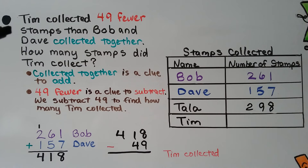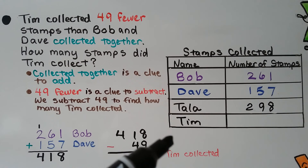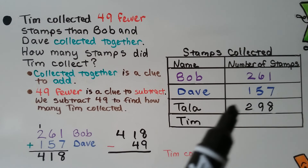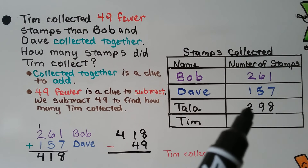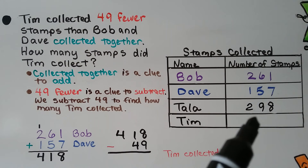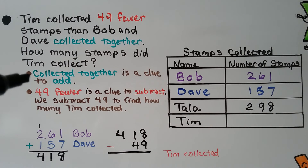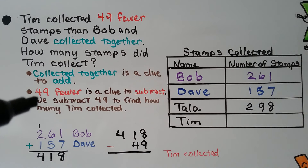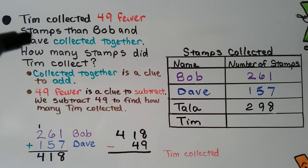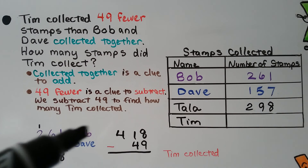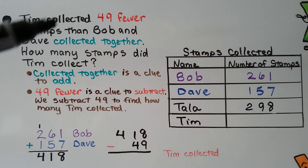Tim collected 49 fewer stamps than Bob and Dave collected together. How many stamps did Tim collect? Let's look at this table showing the stamps they collected. Bob collected 261, Dave collected 157, and Tala collected 298 — but we don't need Tala's information for this problem. 'Collected together' is a clue to add, and '49 fewer' is a clue to subtract. So we add Bob and Dave's numbers to get a sum, then subtract 49 to find how many Tim collected.